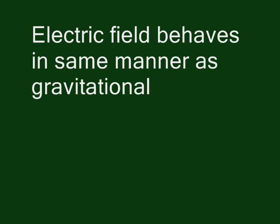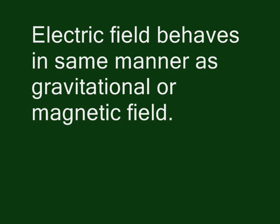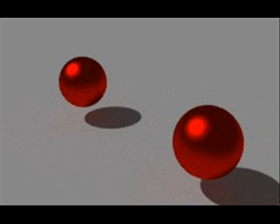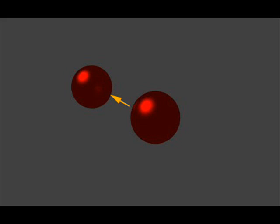An electric field behaves in same manner as gravitational or magnetic field. There is always a force acting on a charged body when it is brought nearer to another charged body. This force acts on the bodies in a definite direction.